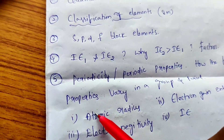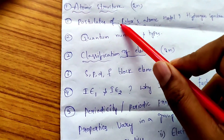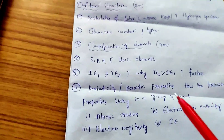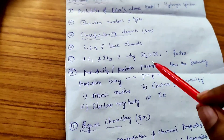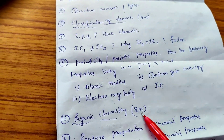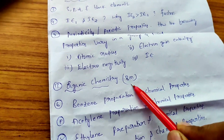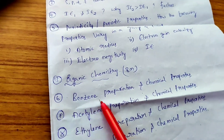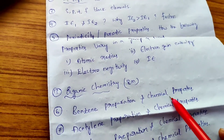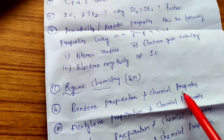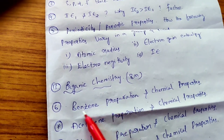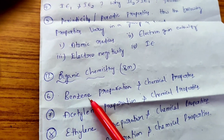So these 3 questions from Classification of Elements and 2 from Atomic Structure — a total of 5 questions — and we need to attempt 2 of the 8-mark questions. From organic chemistry, 1 important question: How is benzene prepared from acetylene, and write the chemical properties of benzene — nitration, sulfonation, ethylation, acylation, and other reactions.